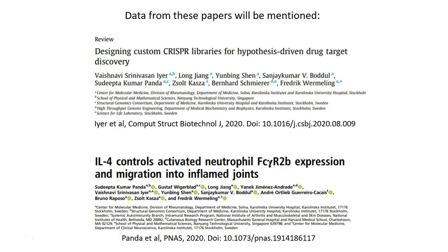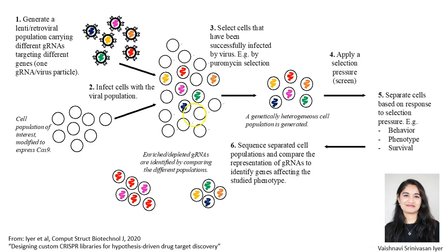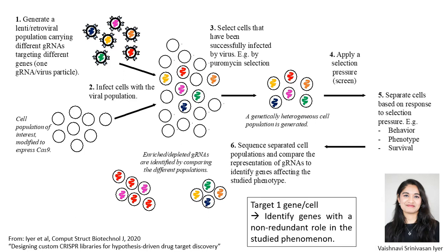I will briefly touch upon some papers, so if you're interested, read more in those. Here is a figure that was made by Vaish in the lab for a review, and it's describing a CRISPR screen. A CRISPR screen is something you do to understand some kind of cellular behavior — typically you generate genetic heterogeneity using CRISPR targeting many different targets. One important strength of these screens is that we typically target one gene per cell.